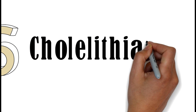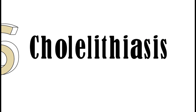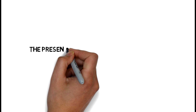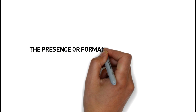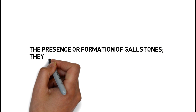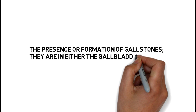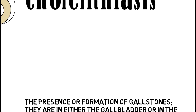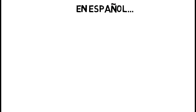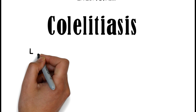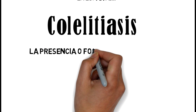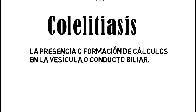6. Chololithiasis — it is the presence or formation of gallstones. They are either in the gallbladder or in the bile duct. En español, cololitiasis — la presencia o formación de cálculos en la vesícula o conducto biliar.